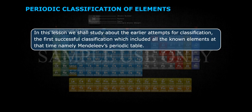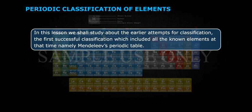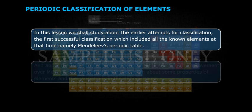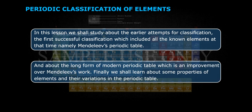In this lesson, we shall study about the earlier attempts for classification. The first successful classification, which included all the known elements at that time, namely Mendeleev's periodic table, and about the long form of the modern periodic table, which is an improvement over Mendeleev's work. Finally, we shall learn about some properties of elements and their variations in the periodic table.